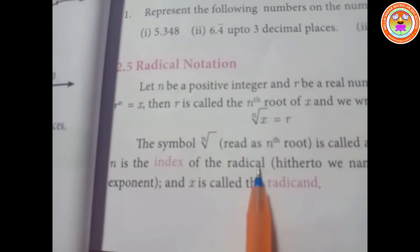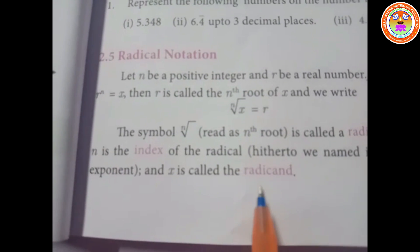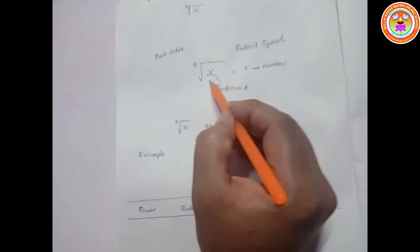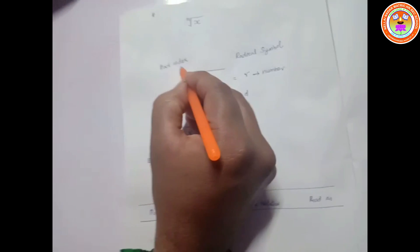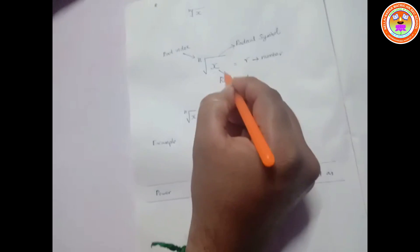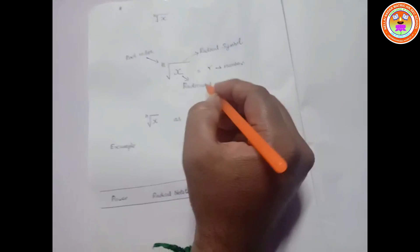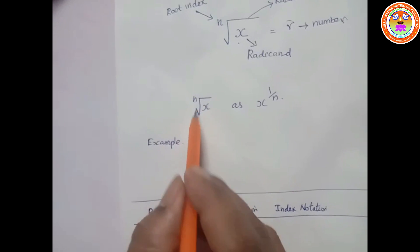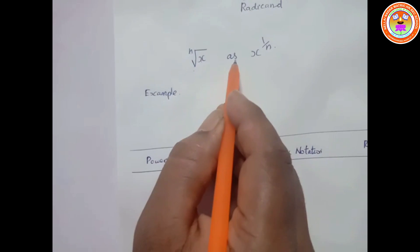It's called a radical. N is the index of the radical, and x is called the radicand. The nth root of x: the root index is n, this symbol is the radical symbol, x is the radicand, and r is the number. The nth root of x can also be written as x to the power of 1 by n.